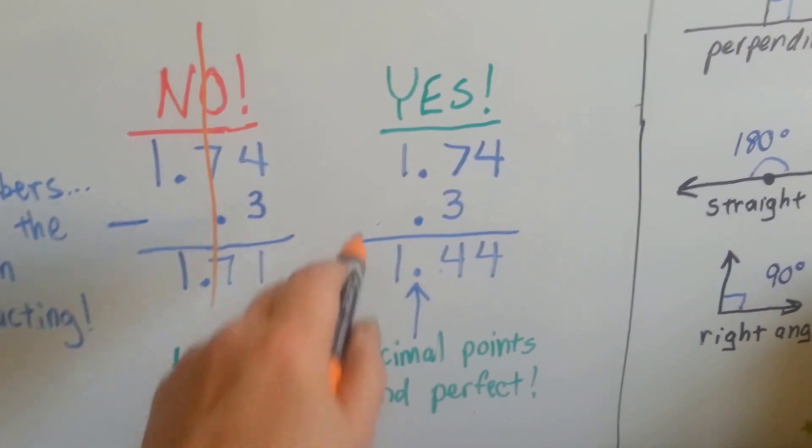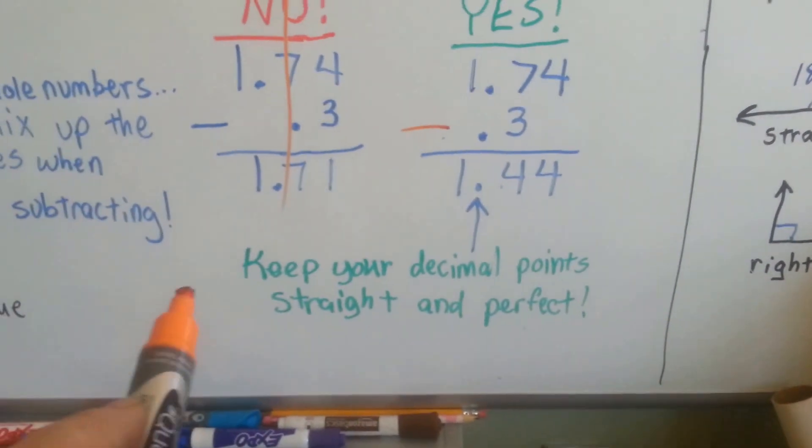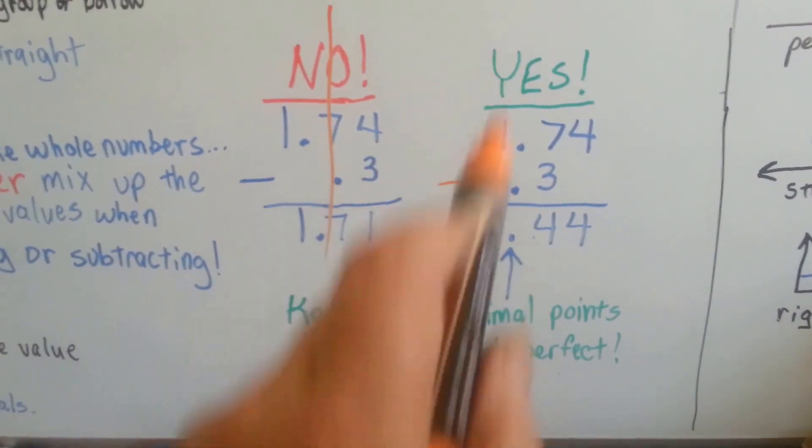Seven take away three is four. And we bring the one down. This is for subtraction. So keep your decimal points straight, perfect and pretty, going straight up and down.